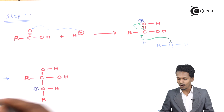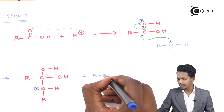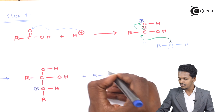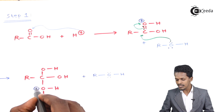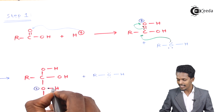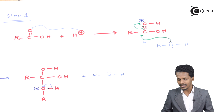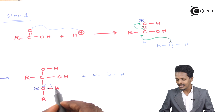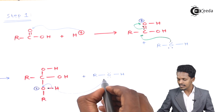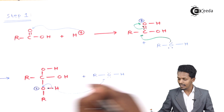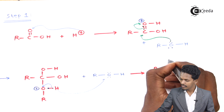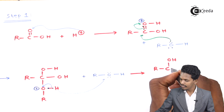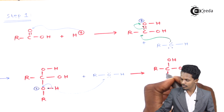To stabilize this new positive charge, another alcohol molecule R'OH — with its lone pair of electrons on oxygen — donates electrons to shift the H⁺ ion toward the positively charged oxygen, thereby neutralizing it.